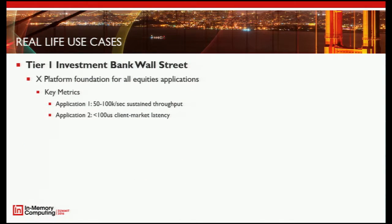Another customer — a tier-one investment bank on Wall Street — runs their entire equities department on X. They run less than 100 microseconds client-to-market latency with zero jitter. It is 100% Java. From the point a request comes from the client on the network to the point it leaves for the market — full processing — less than 100 microseconds, because of all the facets we discussed.